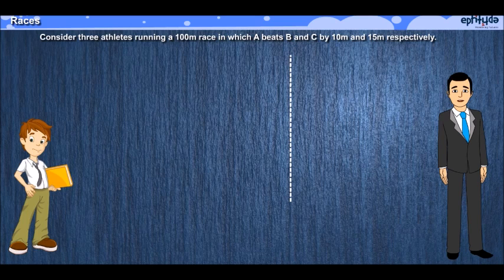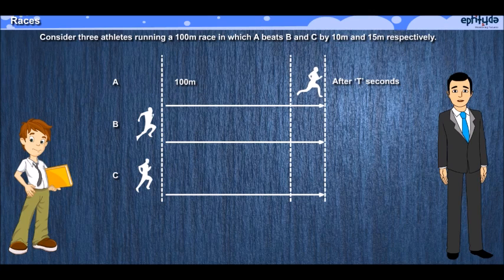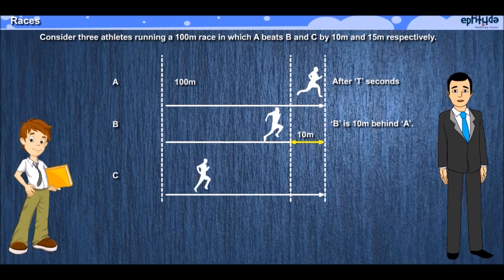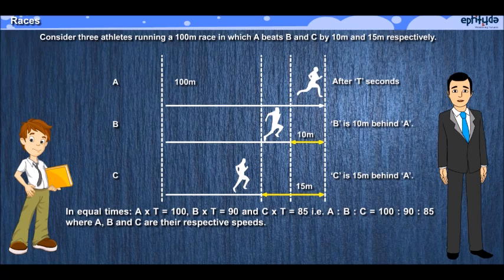Here A, B and C run a 100 meter race and A beats B and C respectively by 10 and 15 meters. What this implies is that after t seconds, when A would have finished the race, B would be 10 meters behind him while C would end up being 15 meters behind A. Which means that the distances run by the three of them would be 100, 90 meters and 85 meters respectively. Now considering these as distances and the time as t, if you make up your equations, you would see that considering the ratio A:B:C, you would get the ratio as 100:90:85.